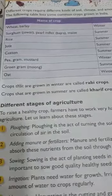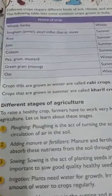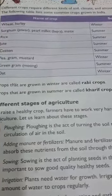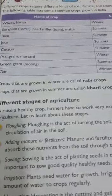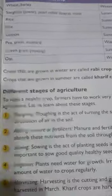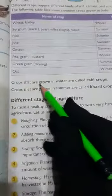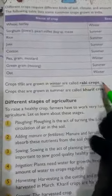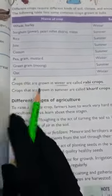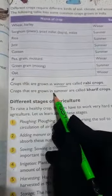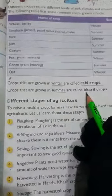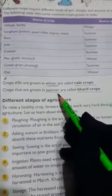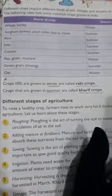This is a very important point you have to remember. Crops that are grown in winter are called rabi crops. Crops that are grown in summer are called kharif crops. Underline these words: in winter, rabi crops; and in summer, kharif crops.